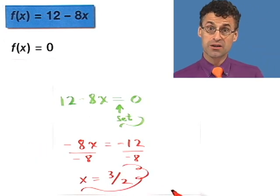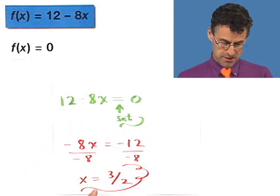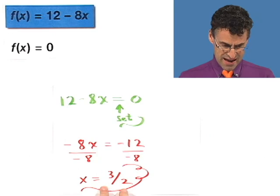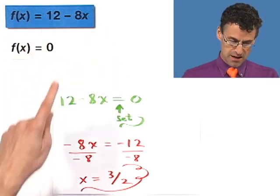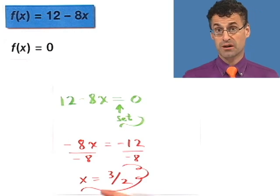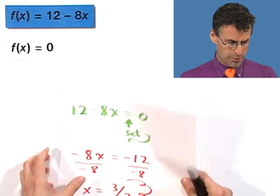That is the x value so that this function will equal 0 there. If you take 3 halves and plug it in for x, what you'll see is that 12 minus 8 times 3 halves is 12 minus 12, which is 0. Awesome. Cool. All right.